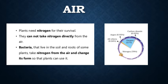Plants need nitrogen for their survival. They cannot take nitrogen directly from the air. Bacteria that live in the soil and roots of some plants take nitrogen from the air and change its form so that plants can use it.